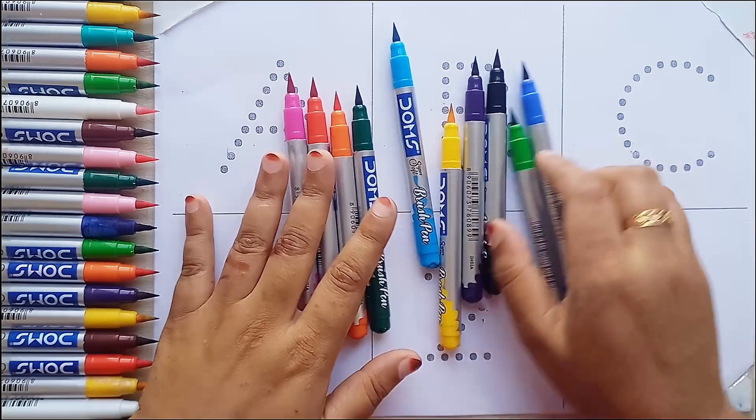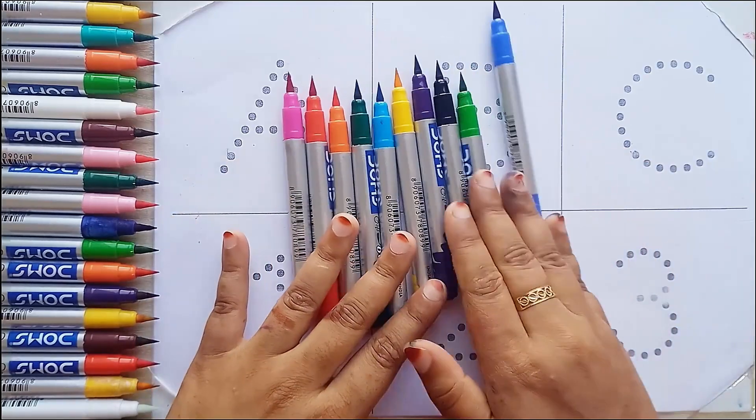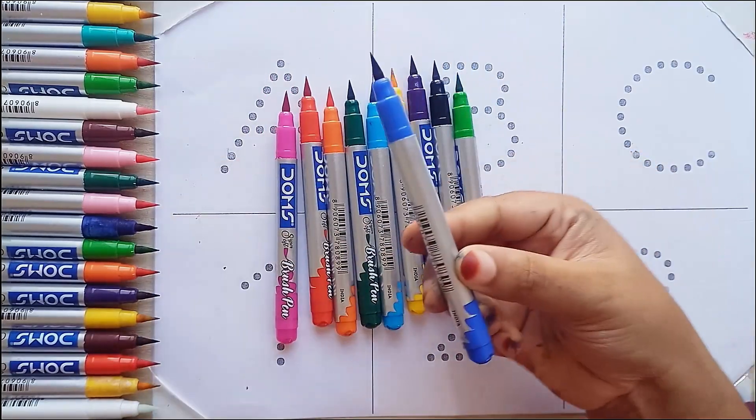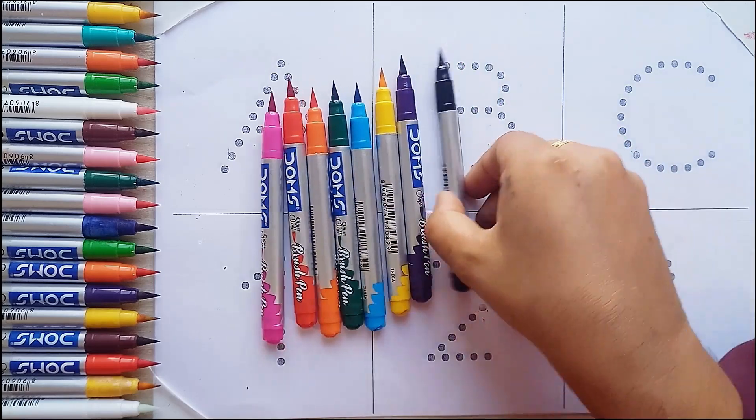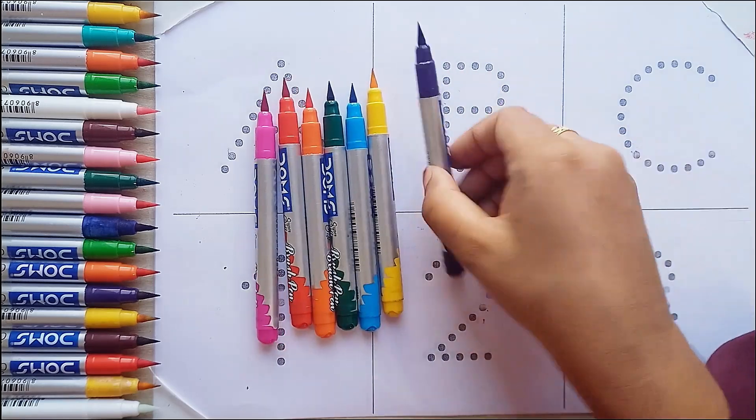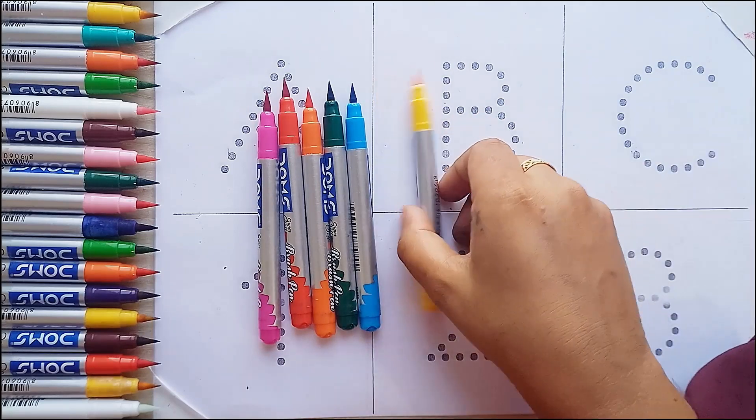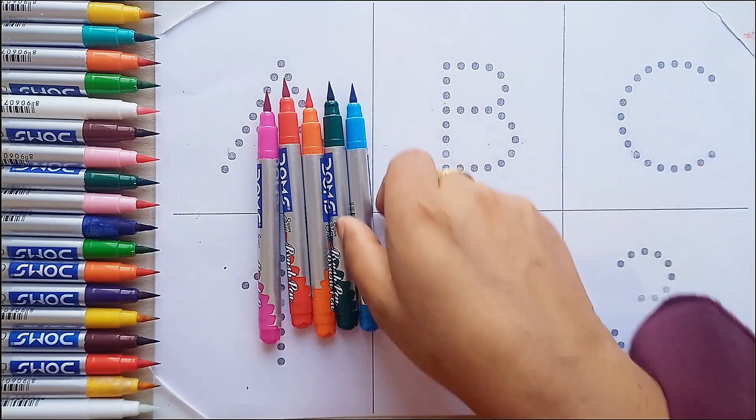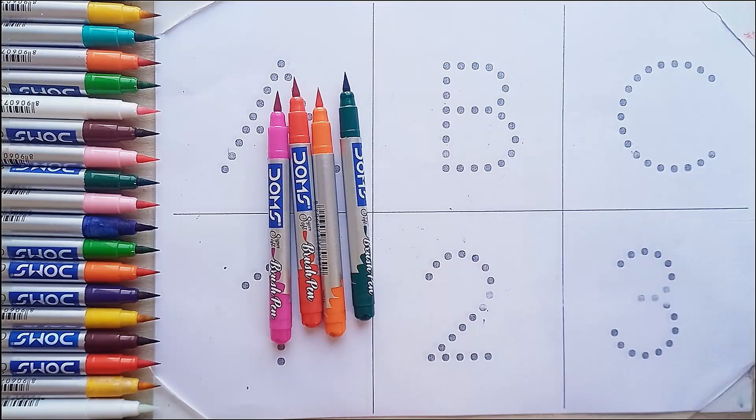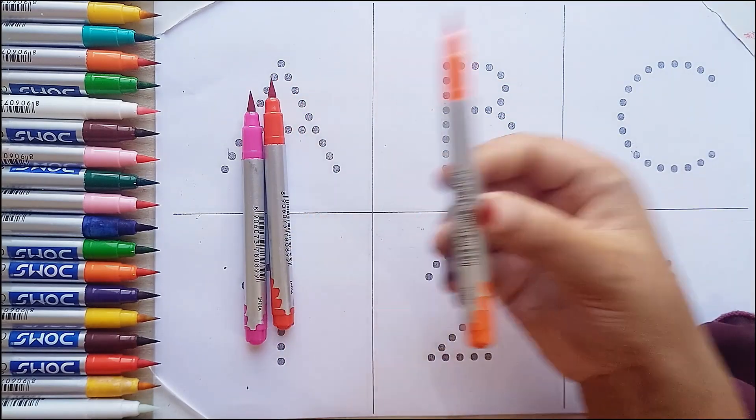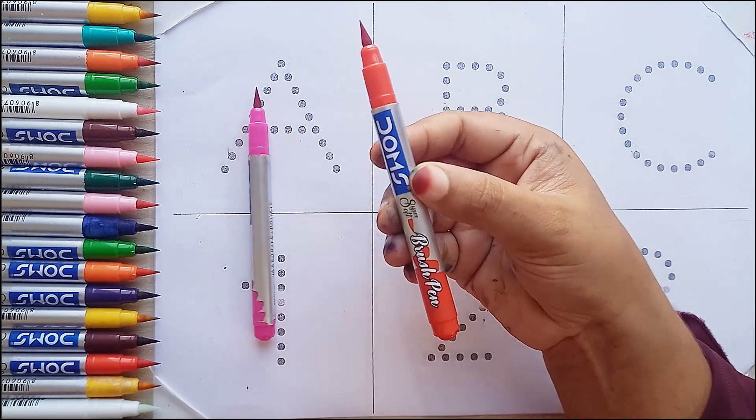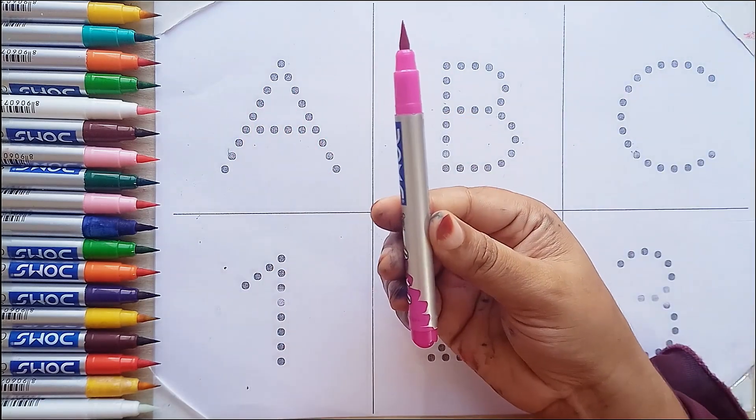Let's start some colors name. Blue color. Light green color. Black color. Violet color. Yellow color. Sky blue color. Green color. Orange color. Red color. And pink color.